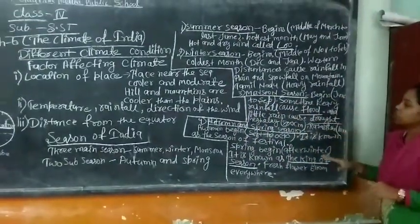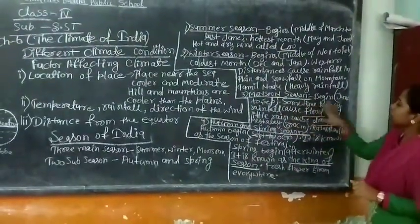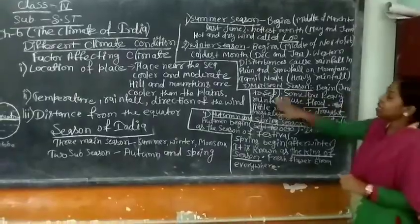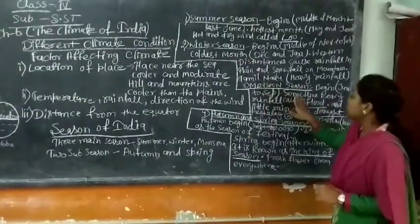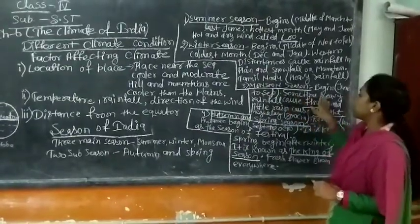Number 3: Monsoon season. Monsoon season starts from June to September.